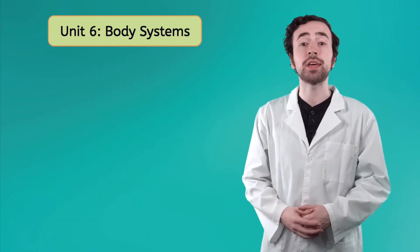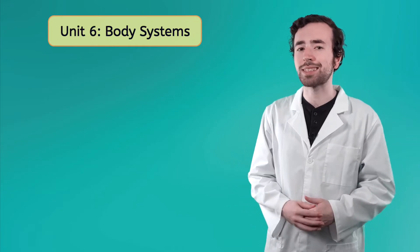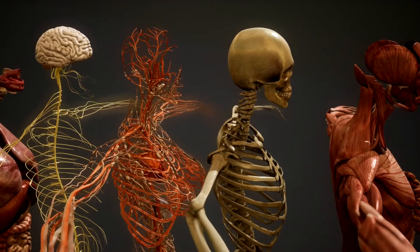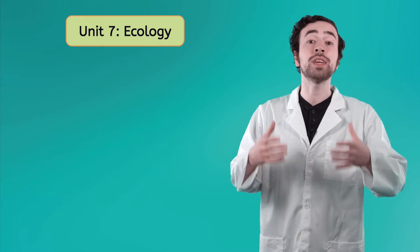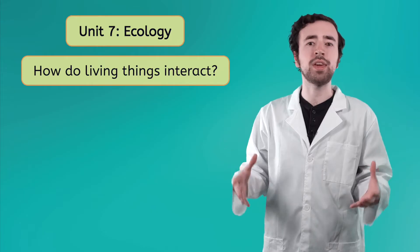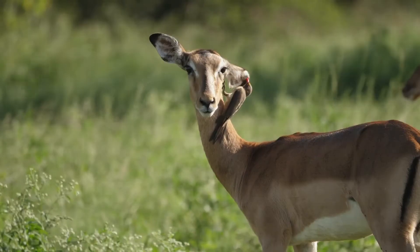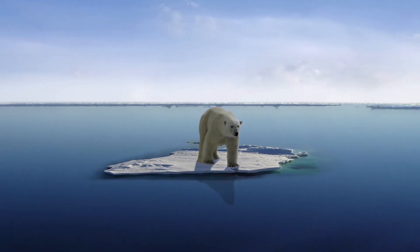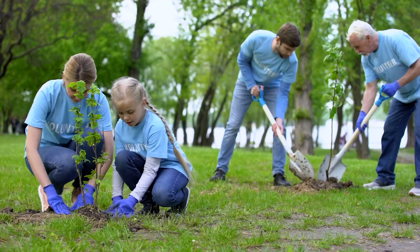In Unit 6, we'll circle back to the living things that we know best — ourselves. In this unit, we'll take a look at the fascinating complexity of the human body systems, and we'll discover how these systems work together to help keep us healthy. By the end of this unit, you'll have a much deeper understanding of the incredible machine that is the human body, including how to take care of your own. Finally, in Unit 7, we will take everything we've learned so far and apply it to the field of ecology, focusing on the question: how do living things interact with each other? Every living thing has a role to play in the grand scheme of life on Earth, but we all coexist in a delicate balance, and there are many things that can throw this balance off. By the end of this unit, you'll have a newfound appreciation for the awe-inspiring complexity of our natural world, and the important role that each of us can play in preserving it for future generations.